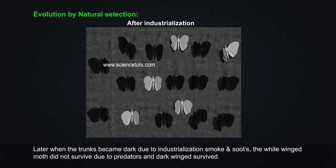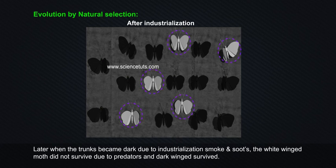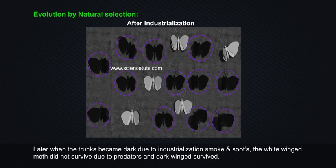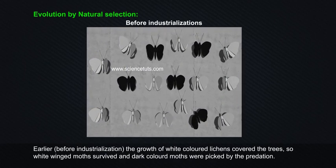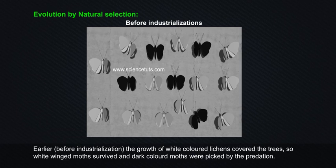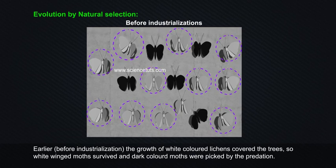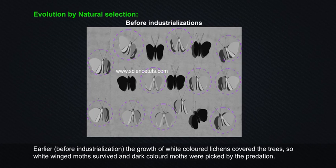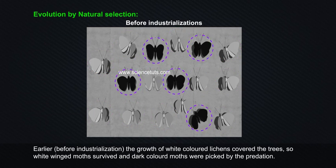The probable reason is that predators spot a moth against a contrasting background. When trunks became dark due to industrialization, smoke and soot, the white-winged moths did not survive due to predators and dark-winged moths survived. Earlier, before industrialization, the growth of white-colored lichens covered the trees, so white-winged moths survived and dark-colored moths were picked by predators.